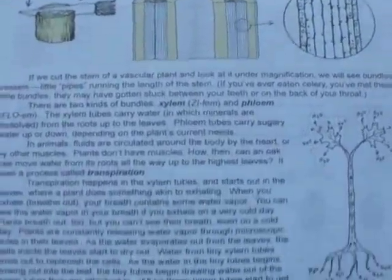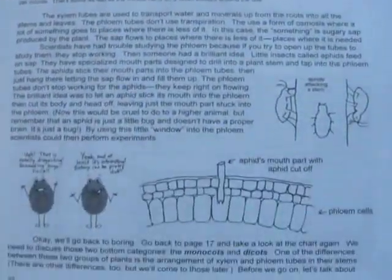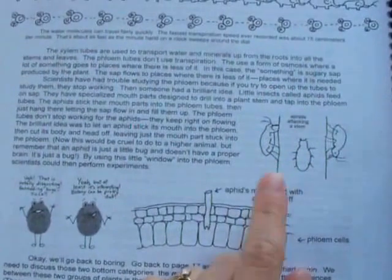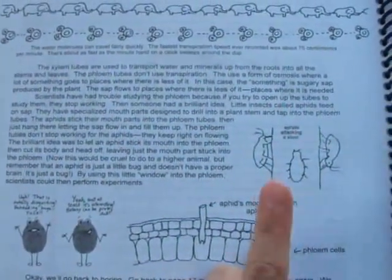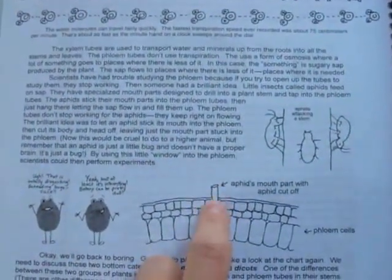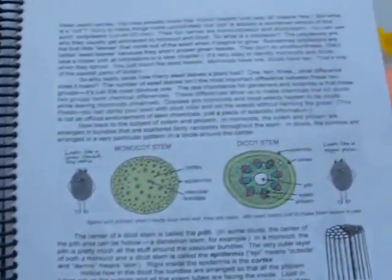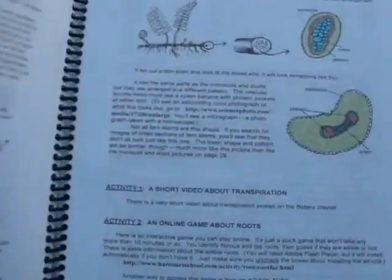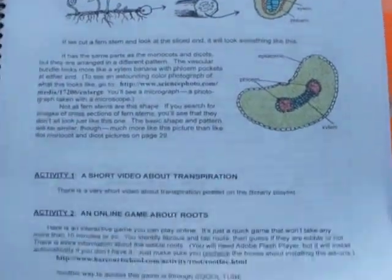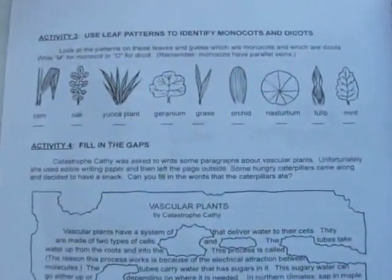Now here's lesson four, the vascular system for level one. And we thought this part was kind of sad. These little aphids, you know how they suck the liquid from plants and kill them, essentially? Well, you'll just have to read it. But anyway, it's funny, it's sad. Model cotton dicot monocot plants. Level two is lesson four.